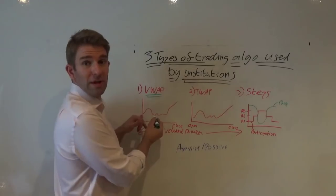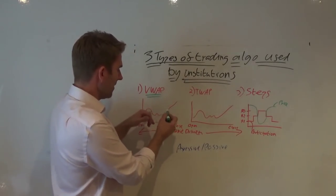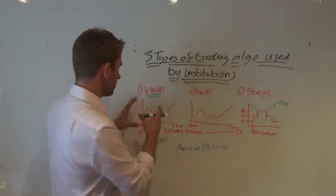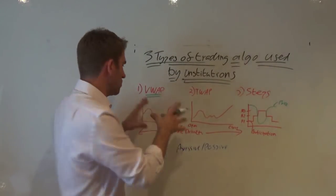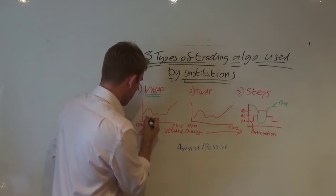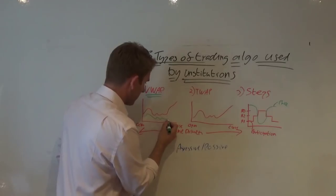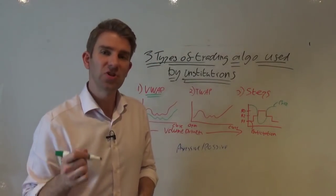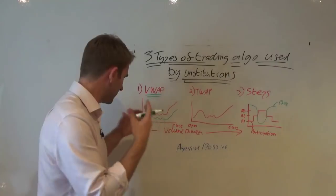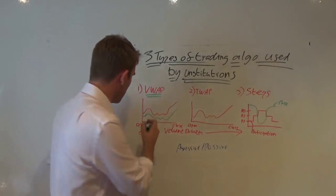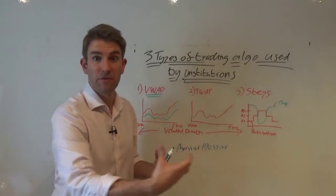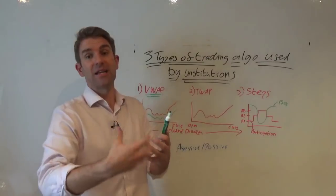The idea of VWAP is that it will mirror the trades throughout the day to try and get that VWAP price. Let's say we want the VWAP for the day — we put into the algo: 'I want to buy a million shares of XYZ stock at the VWAP.' Imagine a volume profile for the day: high volume in the morning at the open, a quiet lunchtime period, then more volume coming into the close. The algo aims to mirror that exact profile.